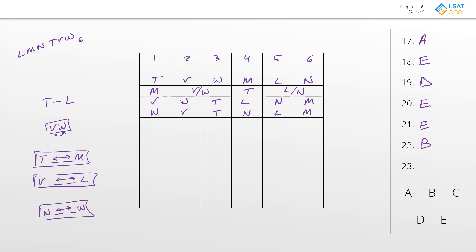Question 23 — what must be false? Answer A: L immediately next to N — we've seen that multiple times, so it can happen. Answer B: L immediately next to W — there's an inherent conflict here. L must be two spaces away from V, and W must be next to V. So W is always right beside V on one side or the other, meaning W can never be adjacent to L. Therefore L and W can never be immediately next to each other. Best answer is B.